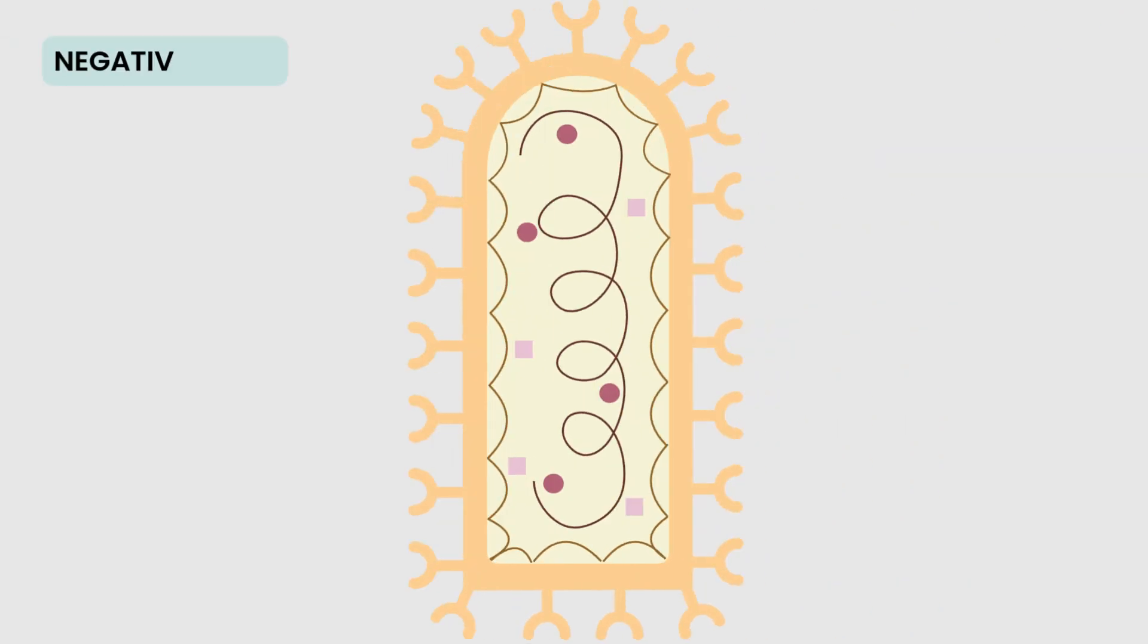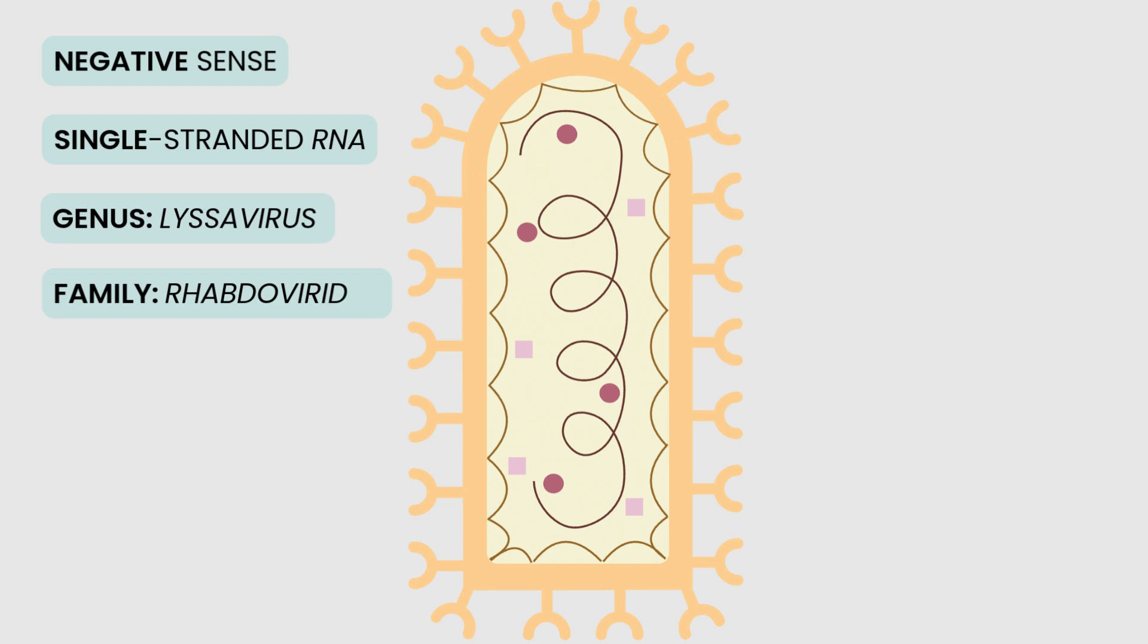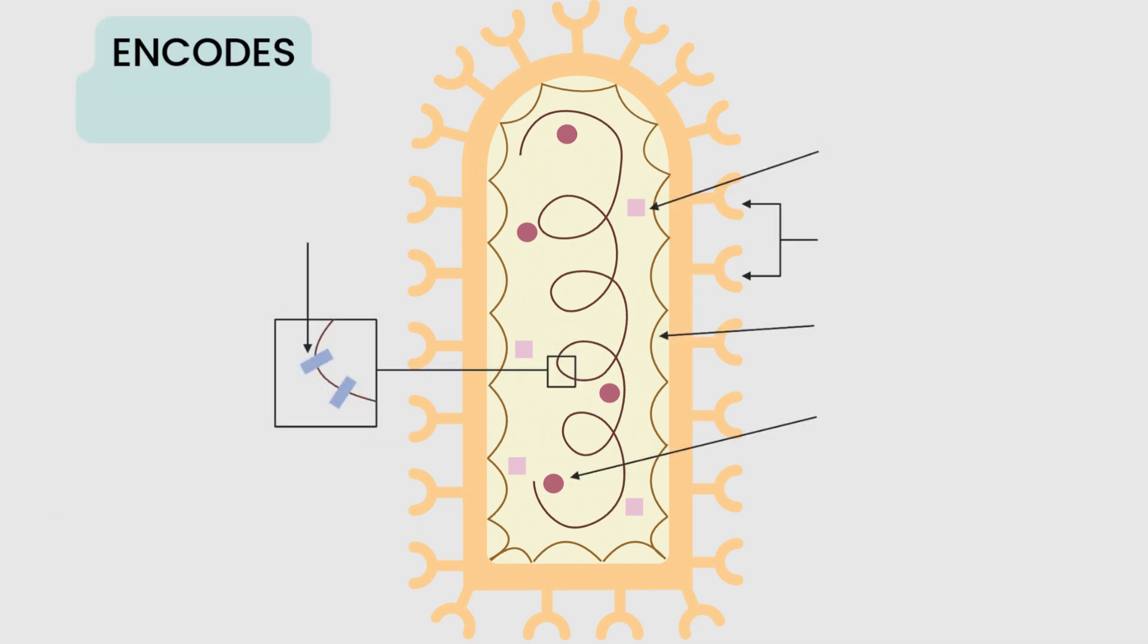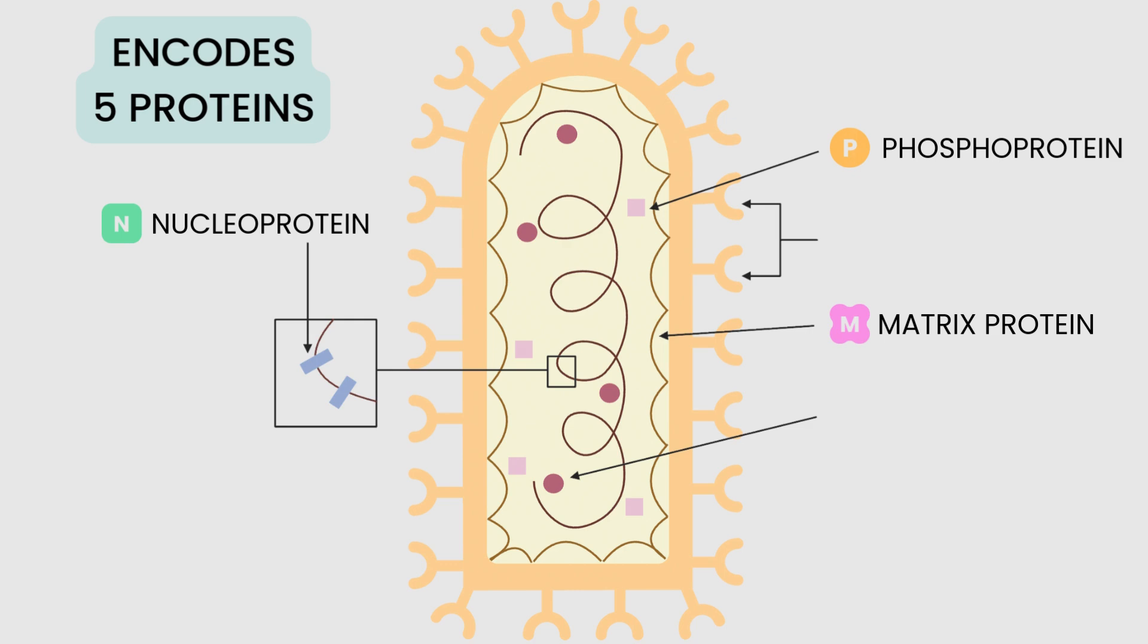RABV is a negative-sense, single-stranded RNA virus belonging to the Lyssavirus genus in the Rhabdoviridae family. Its genome is relatively small, roughly 12 kilobases, and encodes five different proteins—nucleoprotein, phosphoprotein, matrix protein, glycoprotein, and RNA polymerase—all of which play a role in host infection and viral replication.